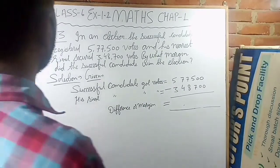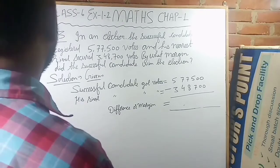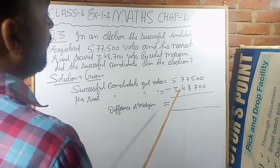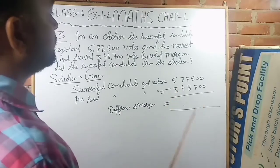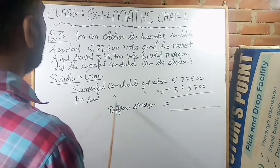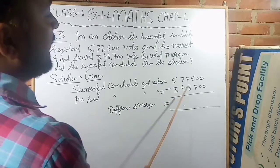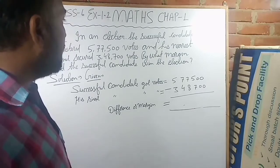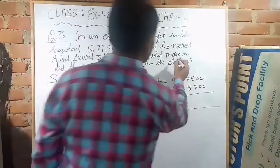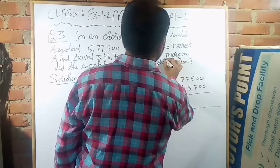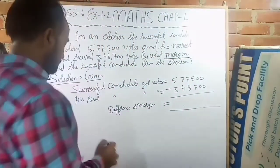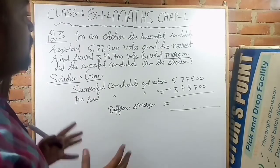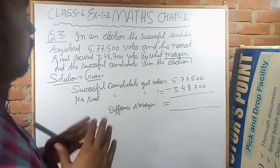First of all, let's identify the information given in this question. The successful candidate got five lakh seventy-seven thousand five hundred votes. His rival candidate got three lakh forty-eight thousand seven hundred votes. We have to find the margin. Margin means difference — how many more votes were obtained by the successful candidate compared to his rival.